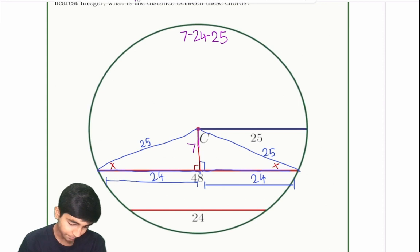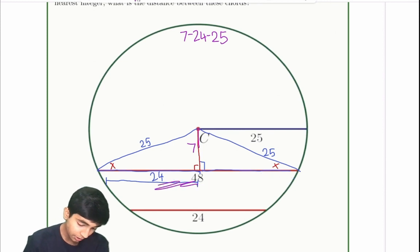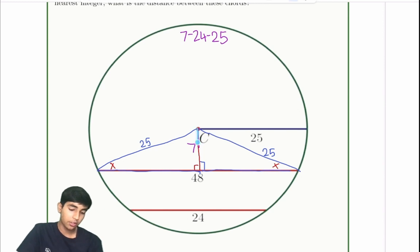Now what else do we know? 7, 24, 25. That gives us a distance from the center of the circle to one of the chords. But that's only one of the chords. We're trying to find the distance between both of the chords. So we know the distance from C to this point here, to one of the chords, the center. And we're trying to find this distance. So if we essentially, if we could find this distance and we subtract it off this distance, we would find the distance between the chords, right?